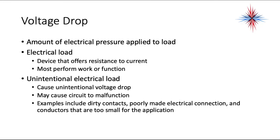Voltage drop is the amount of electrical pressure applied to a load. An electrical load is a device that offers resistance to current, and it must perform work or a function. Unintentional electrical loads can cause unintentional voltage drop, and they can cause circuits to malfunction. Examples of unintentional electrical loads could be dirty contacts, poorly made electrical connections, and conductors that are too small for the application.